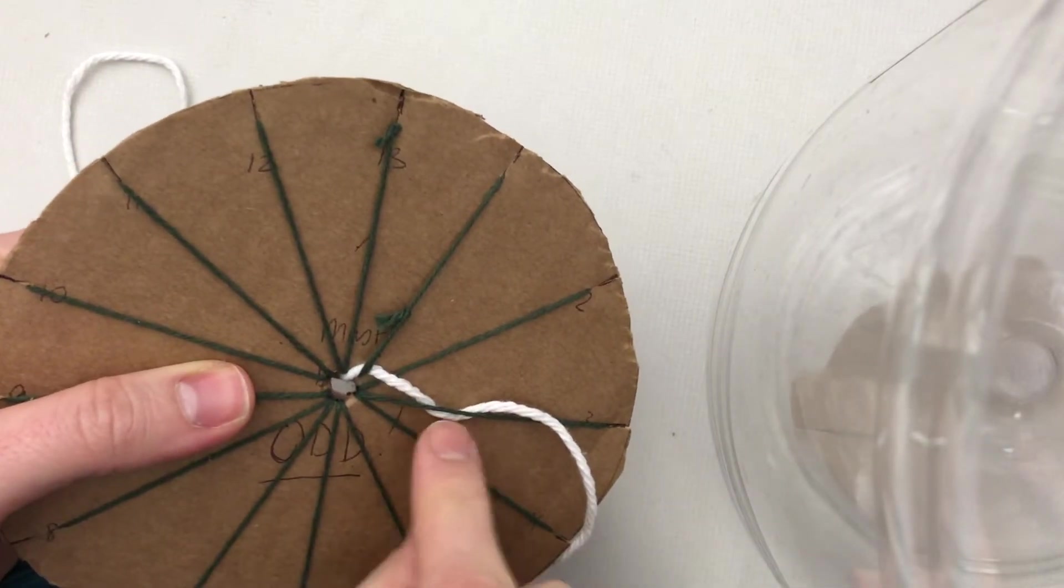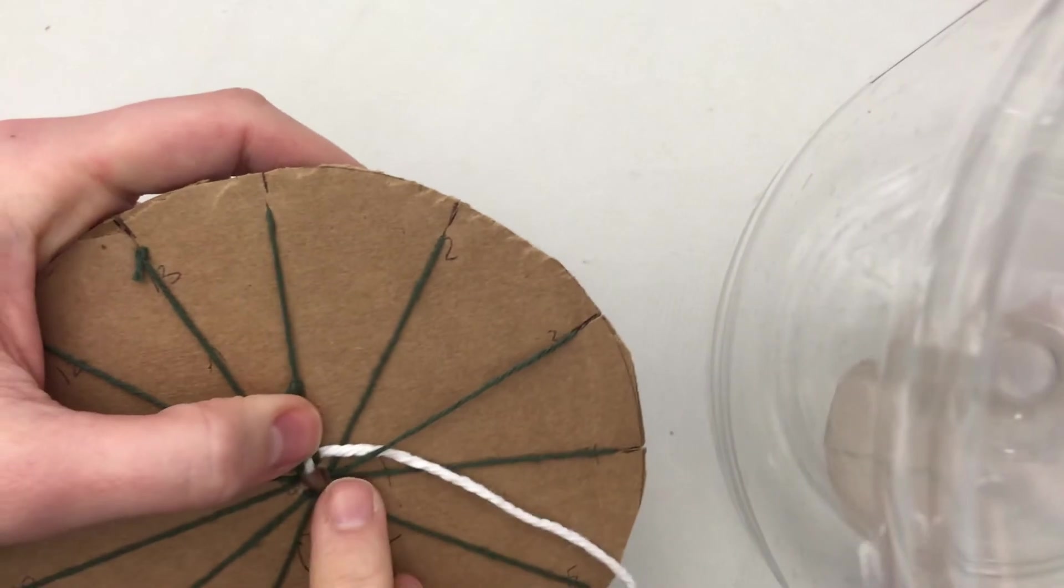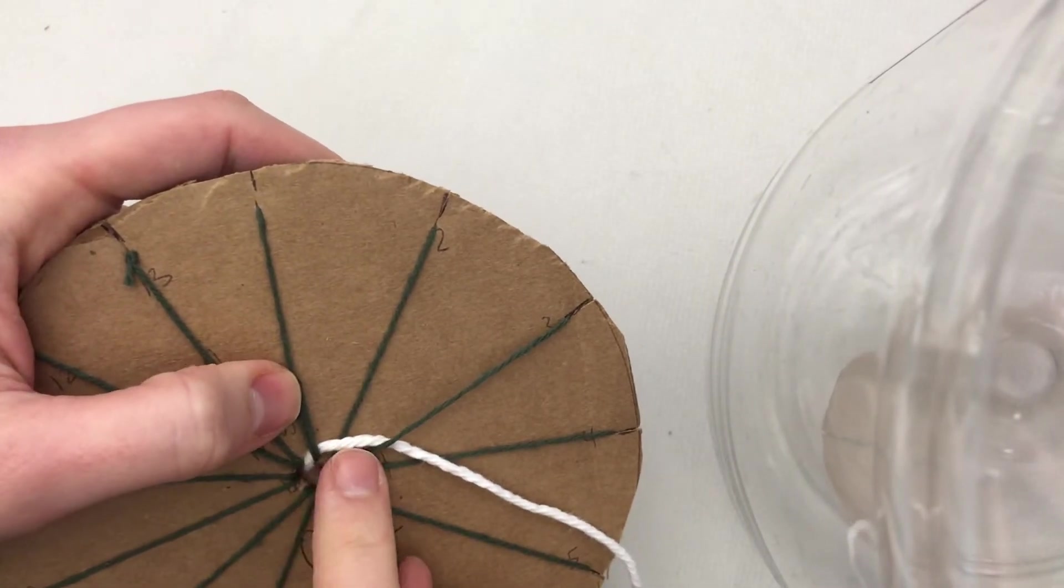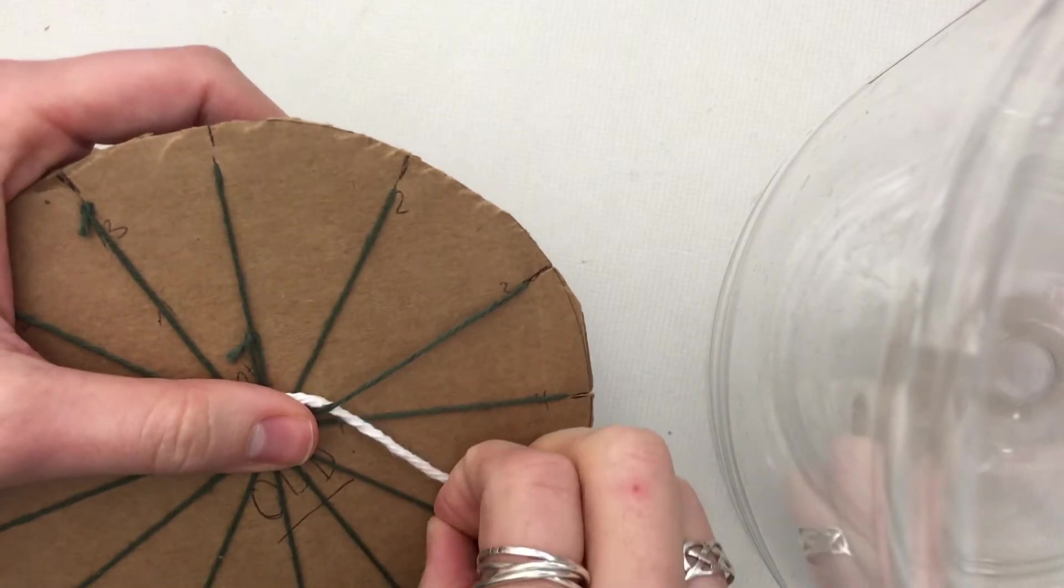Now I'm going to go under. I'm always going to double check myself. So under, over, under means I go over this string and I go under this one. I can lift up my string with my fingers and tuck it under.